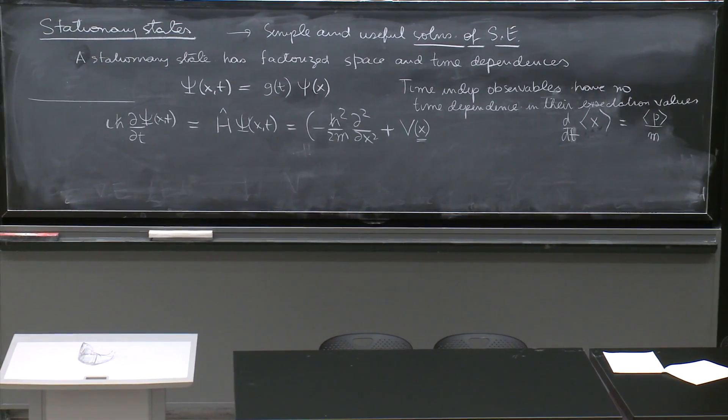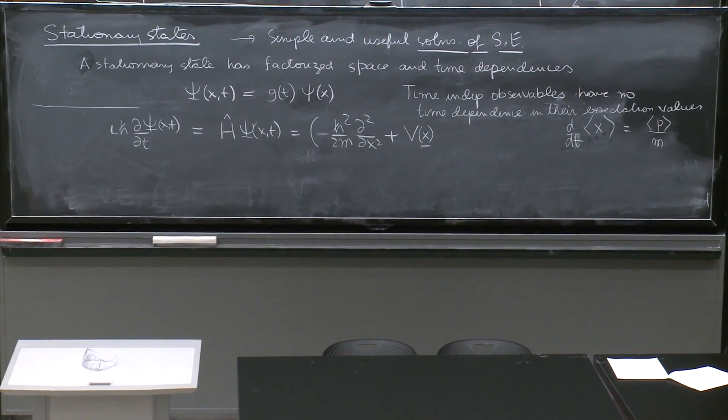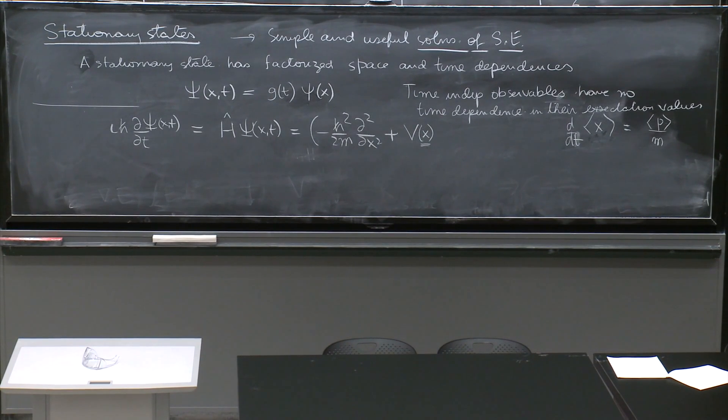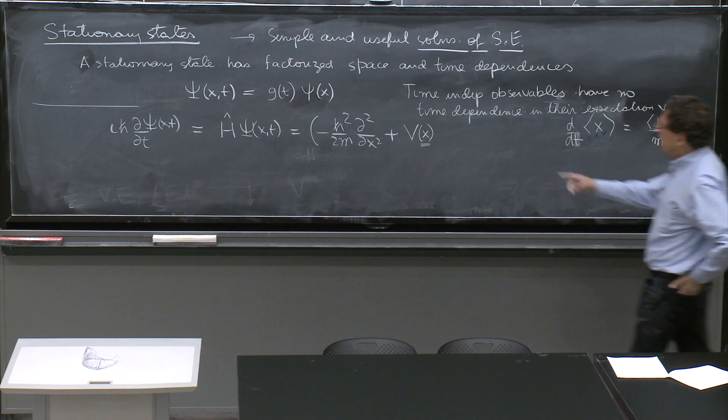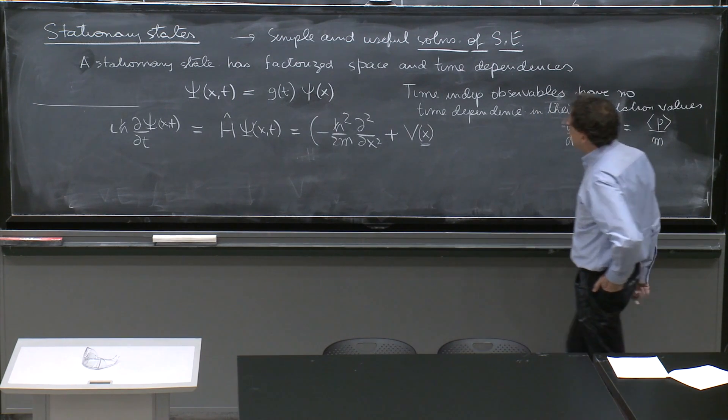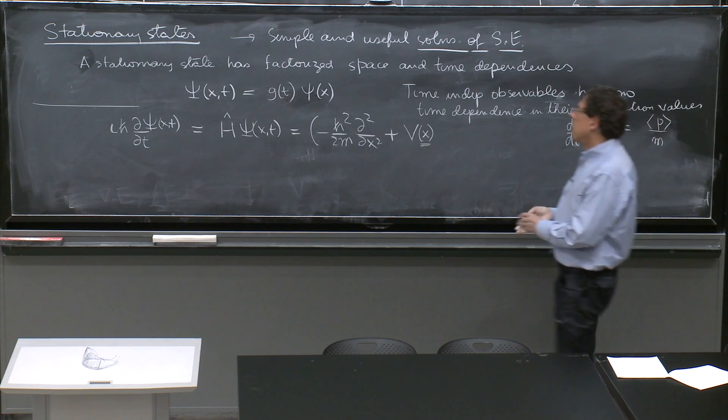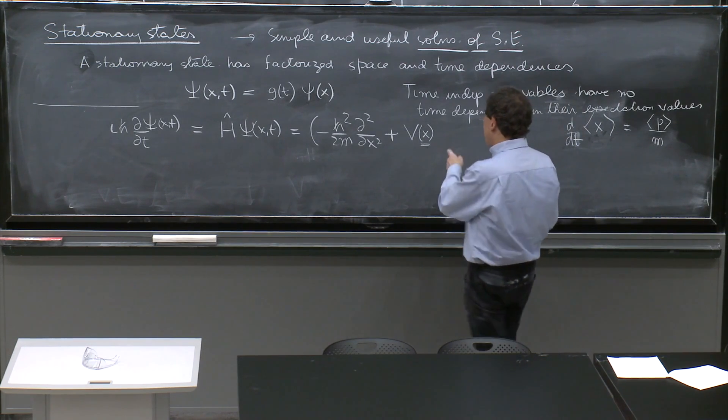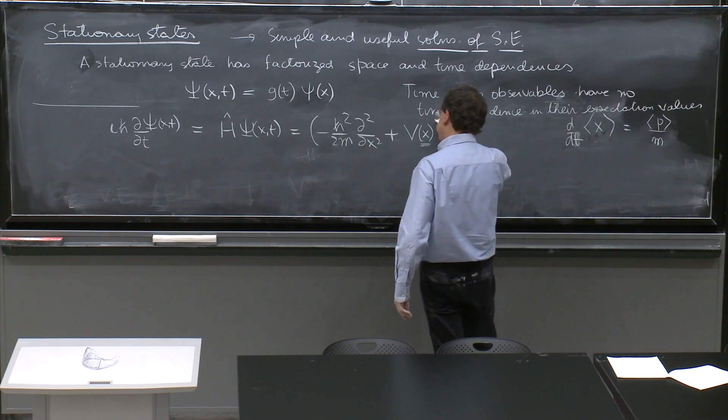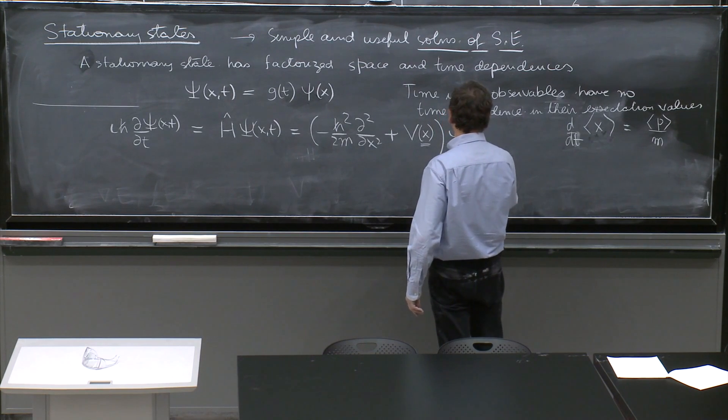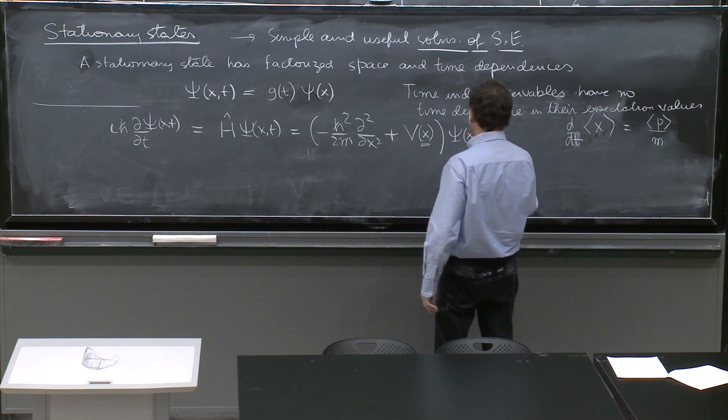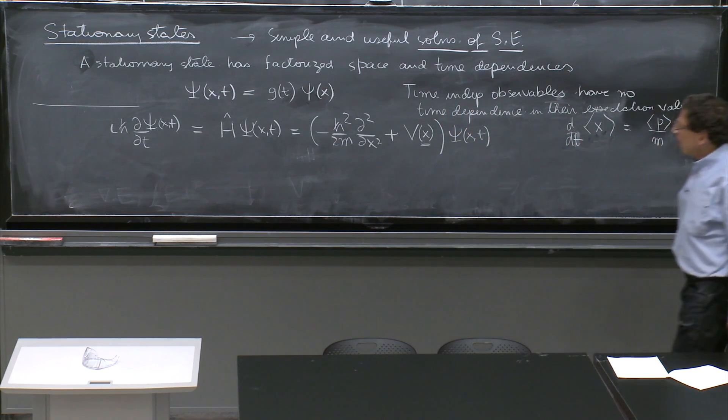And I will consider states that have just that at this moment. Otherwise, it's not so easy to get stationary states. If you have a potential that has time dependence, we cannot do the analysis that we're going to do. So we're going to look only at time-independent potentials. So V of x, like this, times psi of x and t.